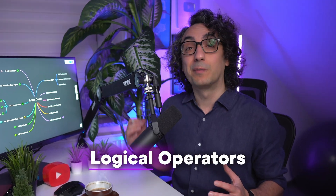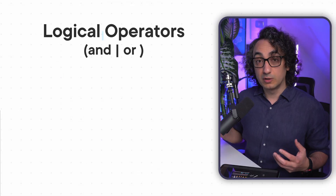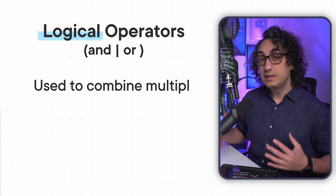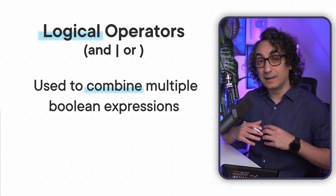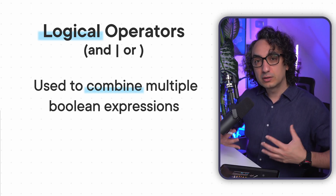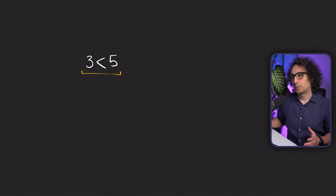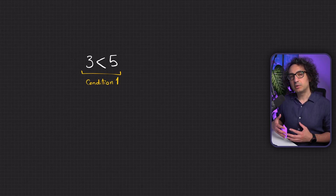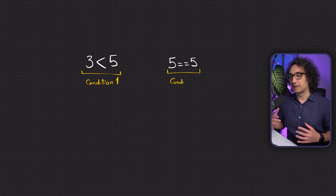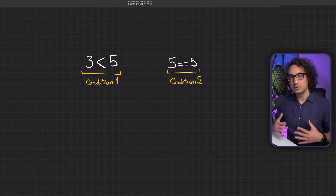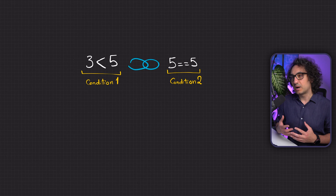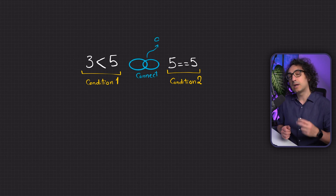Now we're going to talk about the logical operators in Python. The logical operators 'and' and 'or' are used to combine or connect multiple boolean expressions in order to build logic or to build rules. Let's say we have a condition checking if three is smaller than five, and we want to check another condition like is five equal to five. We are now evaluating two conditions, not just one, so we have to connect them somehow.